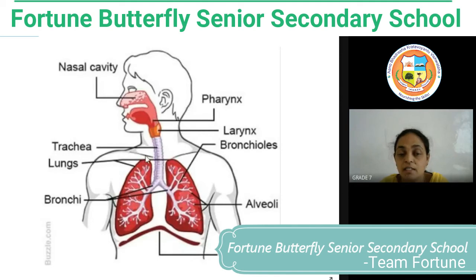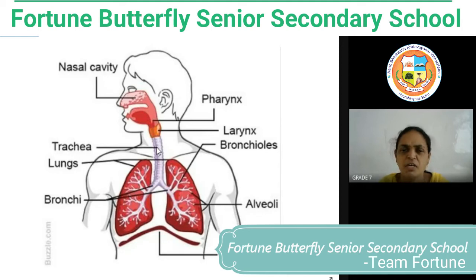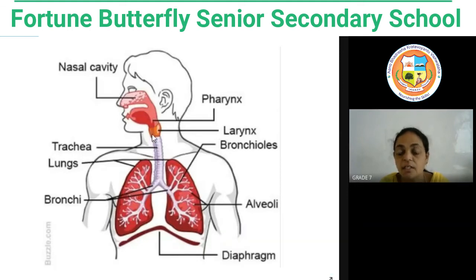The air then enters into the lung through a tubular structure called the trachea. The trachea is constructed with C-shaped cartilaginous rings. The function of these C-shaped cartilaginous rings is to prevent the trachea from collapsing or closing.